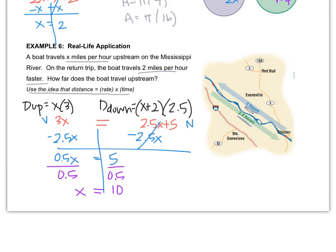Don't circle it as your answer! Remember, some of you got tricked in the last question. It says how far does the boat travel upstream. This only represents the speed going upstream. We need to know how far it traveled. It went 10 miles per hour for 3 hours, so 10 miles per hour for 3 hours gives us 30 miles.